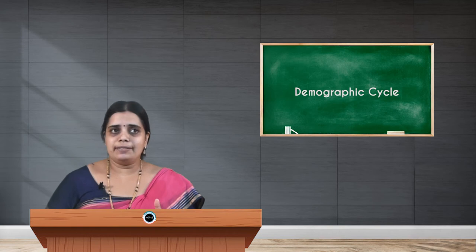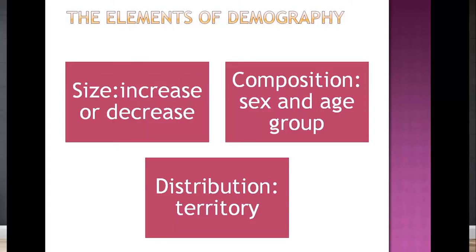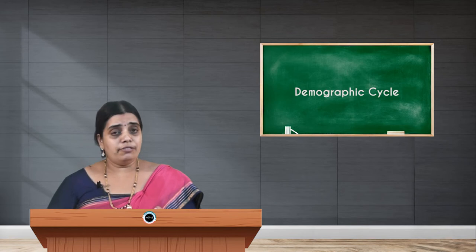Next, we will see what the elements of demography are. The elements of demography are mainly three things: size, composition, and distribution of the population. The size can either increase or decrease. Composition is explained in two important terms: sex composition and age composition. Distribution is the territorial consideration of the population.